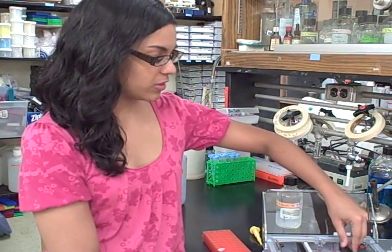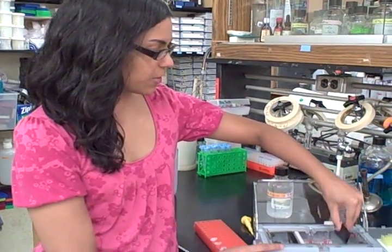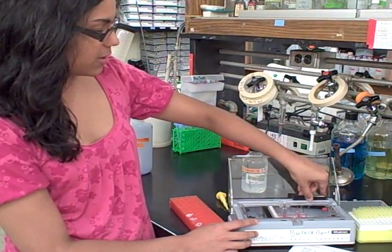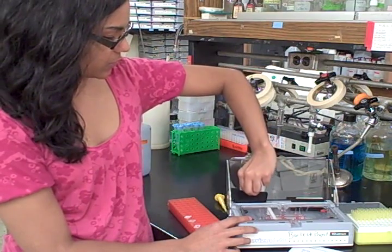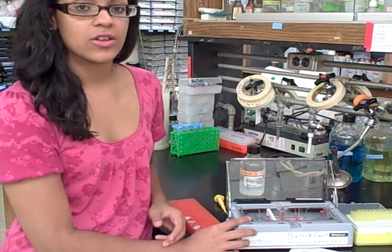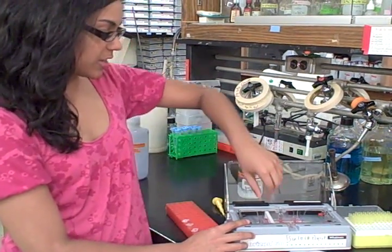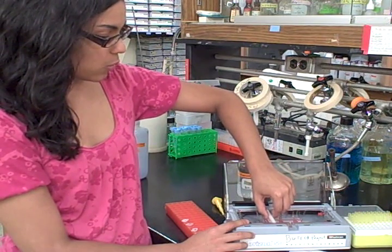The next part of the electrophoresis activity is to actually load the gel. The first thing we want to do is pull out the stoppers that are on either side and put them back in their holders. Next, we want to pull out the comb really gently to make sure that we keep our wells intact.